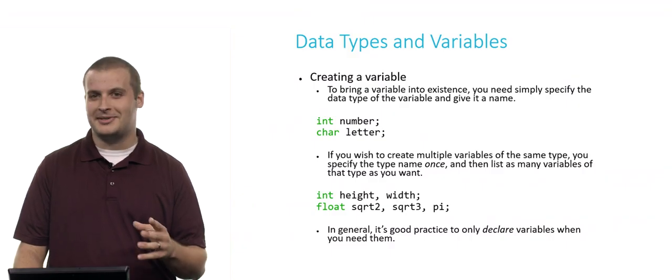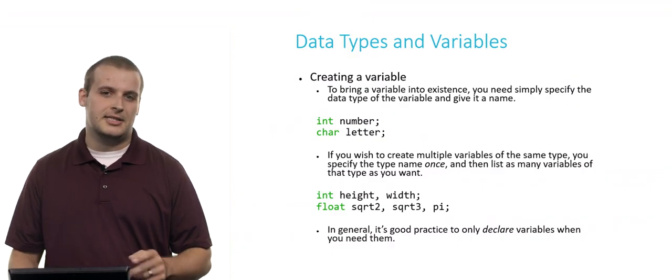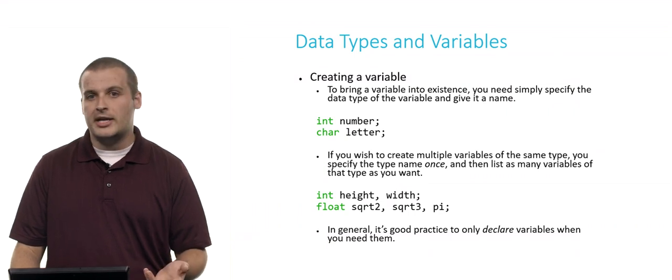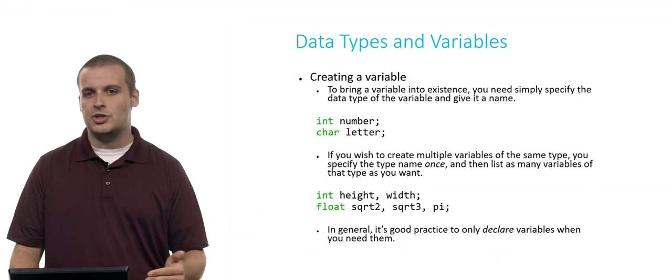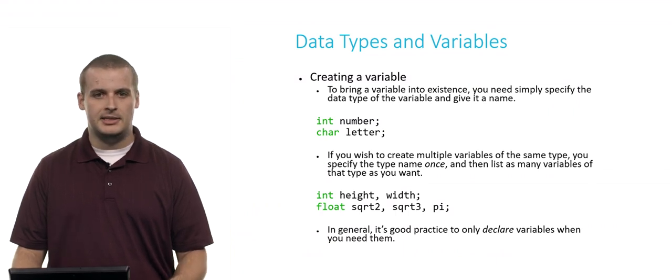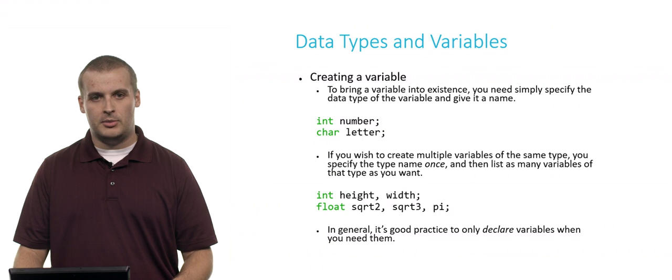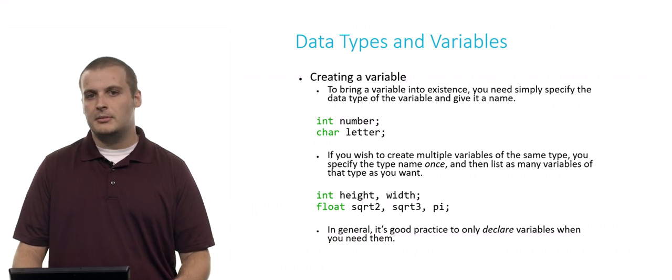If you want to create a variable, all you need to do is two things. First, you need to give it a type. The second thing you need to do is give it a name. Once you've done that and slapped a semicolon at the end of that line, you've created a variable. So here's two examples: int number semicolon, char letter semicolon. I've created two variables. Number is capable of holding integer type values because its type is int. Letter can hold characters because its data type is char.